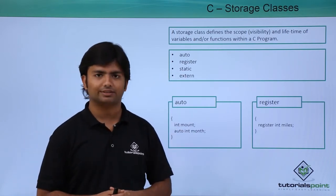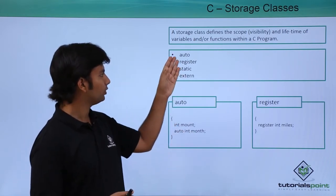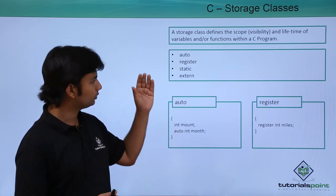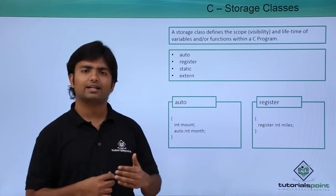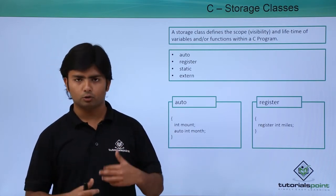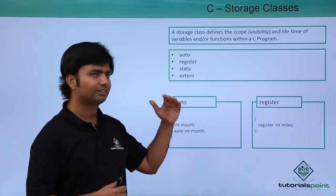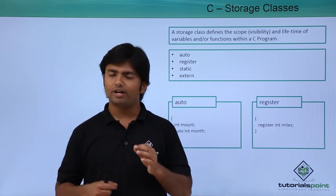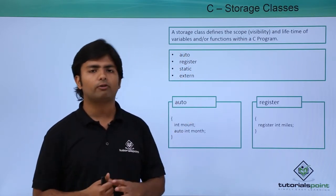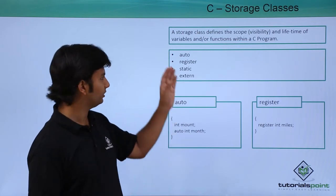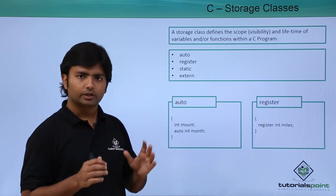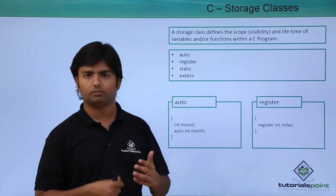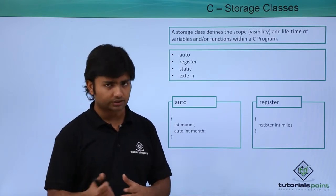In C language, we have four storage classes: auto, register, static, and external. Each storage class has a different way to be used, and we will discuss each one separately. Whenever you define a local variable, by default it is auto. If you want to change the storage class from auto to something else, you can specify it explicitly.